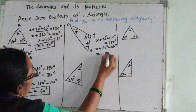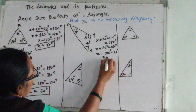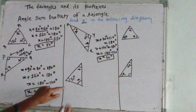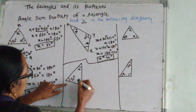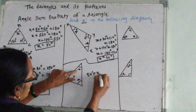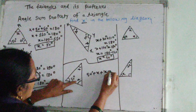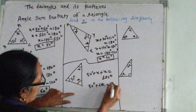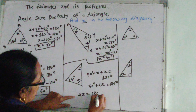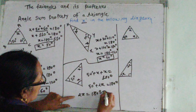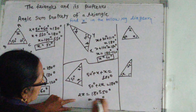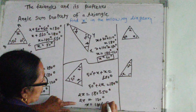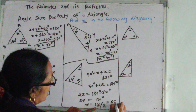Now in this triangle, one angle is a right angle and one is 30 degrees. X plus 90 plus 30 equal to 180 degrees. This angle is a right angle, and a right angle is equal to 90 degrees. X equals 180 minus 120, equal to 60 degrees.